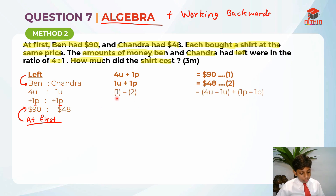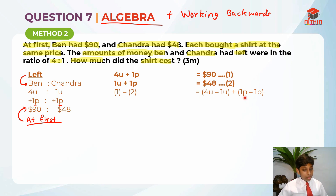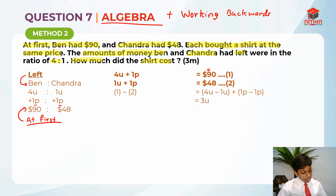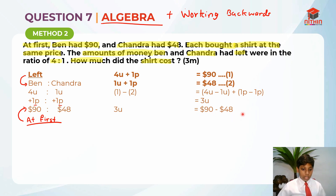Now we take Equation 1 minus Equation 2. That gives 4u minus 1u, and 1p minus 1p — the parts cancel out leaving 0p, and we have 3 units left. So 3 units equals $90 minus $48, which means 3 units equals $42. Find 1 unit: 1 unit equals $42 divided by 3, which equals $14.